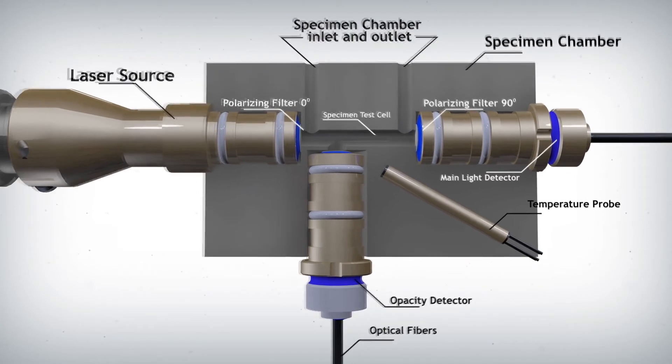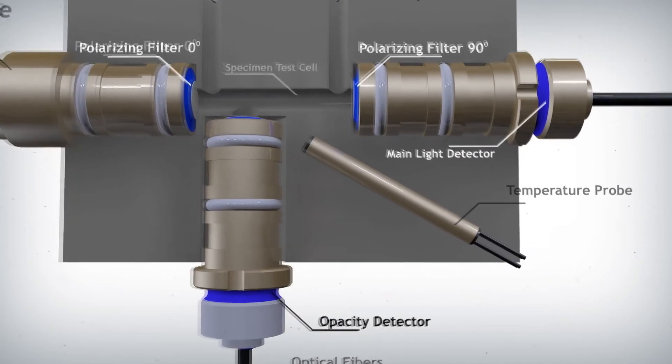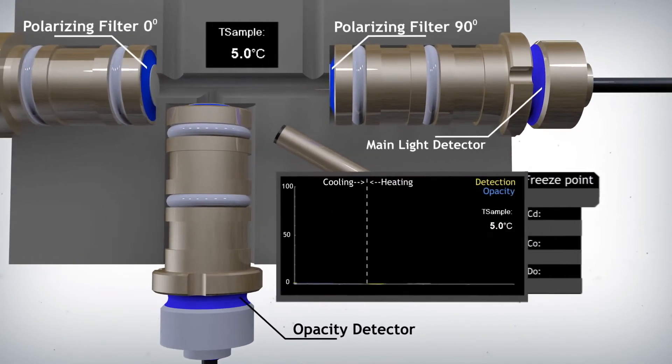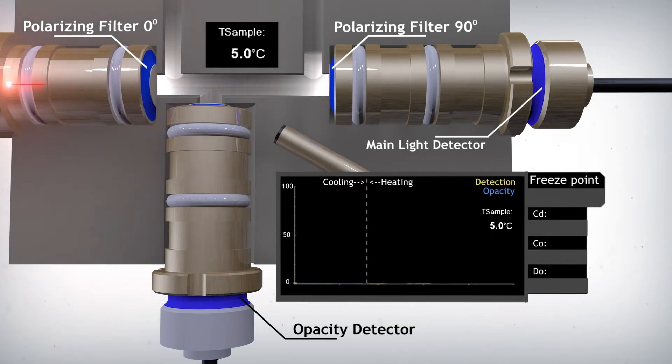Let's see how the detection system works and how the detection signals are displayed for neat jet fuel. As we zoom in on the thermal block, we superimpose the actual temperature and the resulting graph. The sample fills the specimen chamber and the laser turns on. In this example, the test starts at 5.0 degrees and continues cooling.